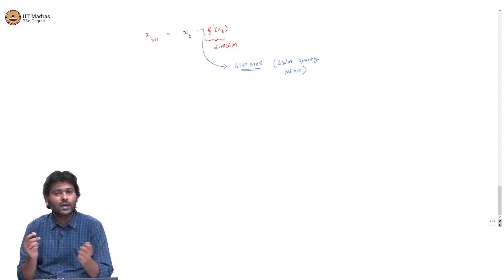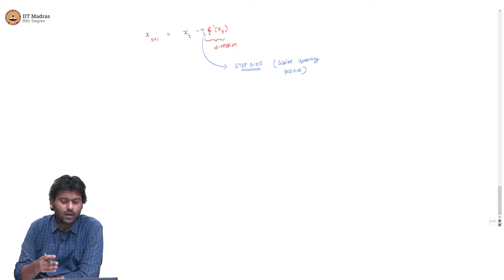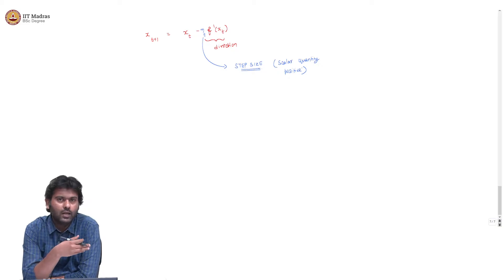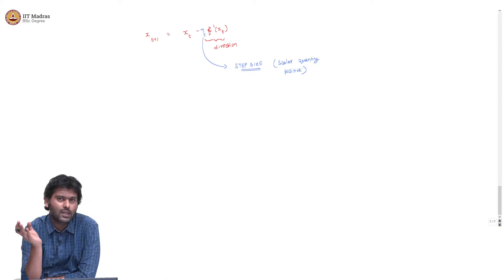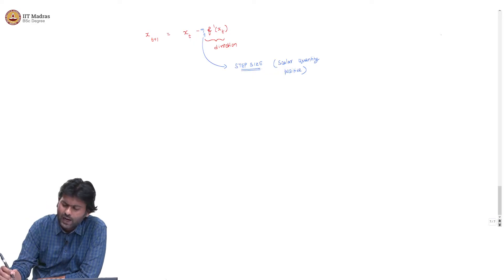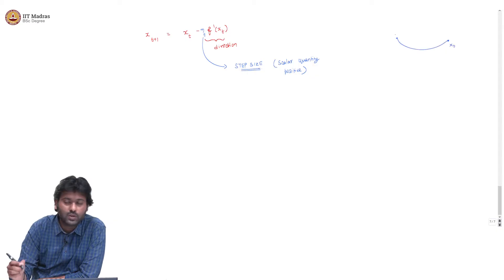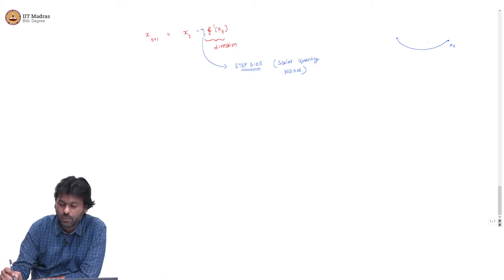If eta_t equals 1 for every t, then we would go back to the original algorithm. But that is a bad algorithm — we know that if you start with 10 you are going to oscillate. So eta_t cannot be 1 all the time. The idea is that you start maybe with 1, because you don't know what is a good step size.